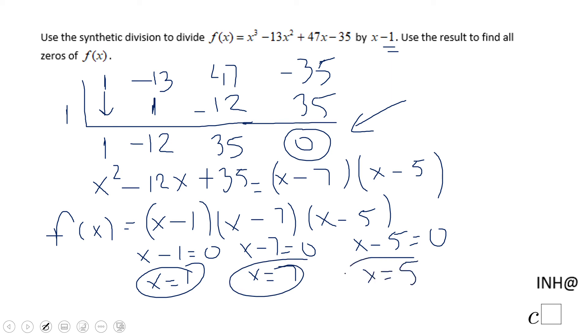These are the three zeros of this f of x. And you see we used synthetic division, got the reduced polynomial x squared minus 12x plus 35, and then we factored it out.